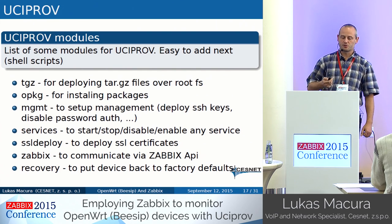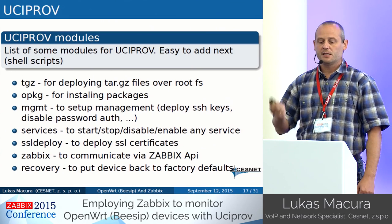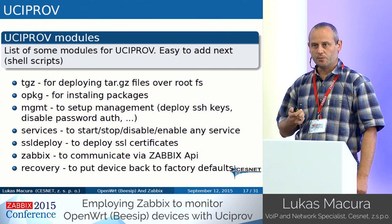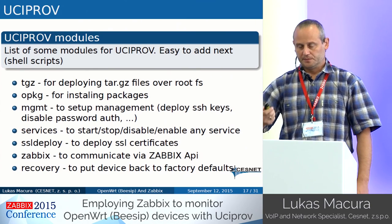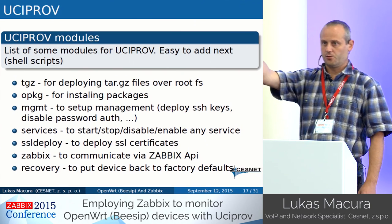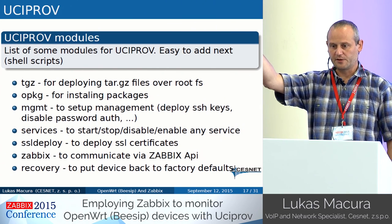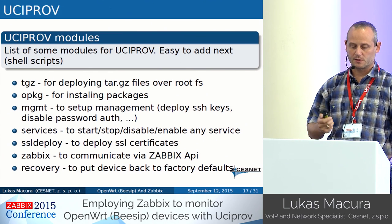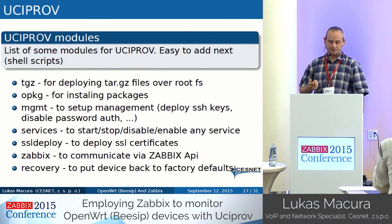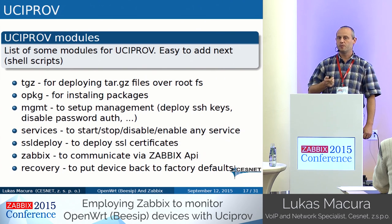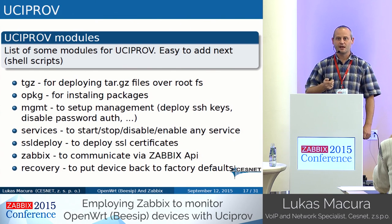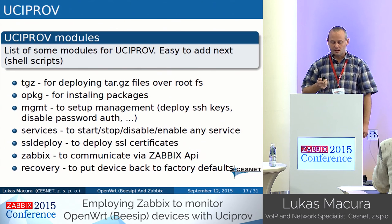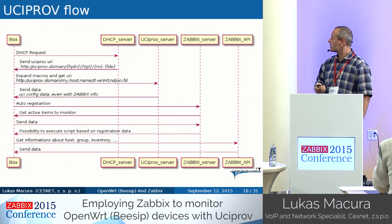The services module is for starting, stopping, disabling, and enabling any service running on OpenWrt. What's nice is the SSL deploy module - during boot the device asks for a certificate request, pushes the certificate request somewhere, and then the certificate is downloaded and used in the box. There's also a Zabbix module to communicate with the Zabbix API. And the recovery module - this is really nice - if everything goes bad and you don't have access to the box, like bad SSH keys and no authentication at all, this module will put the device into factory defaults.